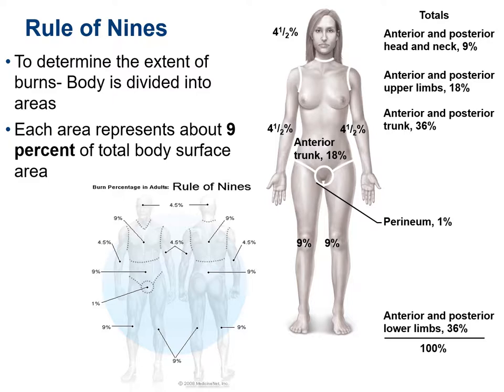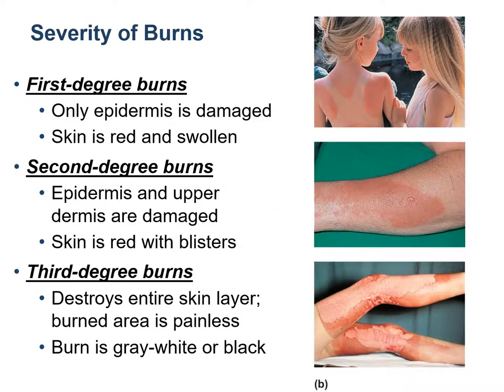A burn is called a first degree burn if only the epidermis — the topmost part — is damaged, and the skin looks red and swollen. It is a second degree burn if the epidermis as well as the upper layers of the dermis are damaged, and the skin is red with blisters. Burns are third degree burns if the entire skin — all of the epidermis and dermis — has been burned, and the burn area is painless.